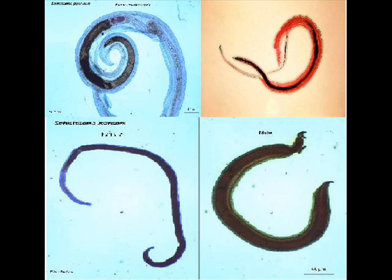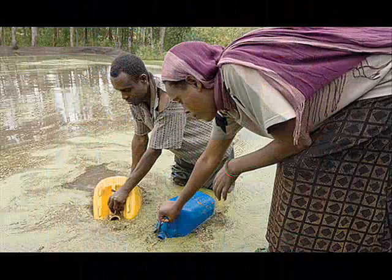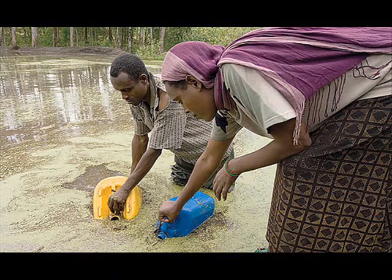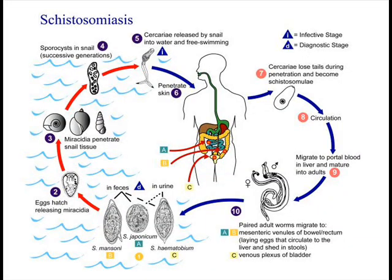Parasites of the genus Schistosoma cause the disease. The disease in humans is part of the complicated life cycle of the parasites. Humans enter freshwater areas that contain snails which harbor Schistosoma parasites that develop into free-swimming cercariae. The cercariae can attach to and penetrate the human skin, migrate to blood vessels, and through lung blood capillaries reach the portal or vesicular blood systems. During migration, the cercariae change and develop from schistosomulae into male and female adult parasitic worms. The worms incorporate human proteins into their surface structures, so most humans produce little or no immune response to the parasites.